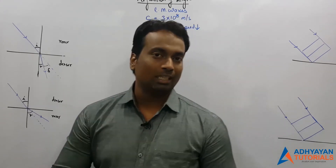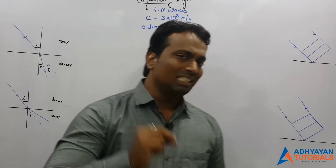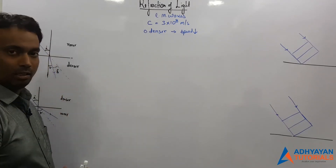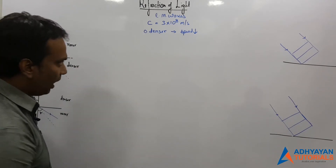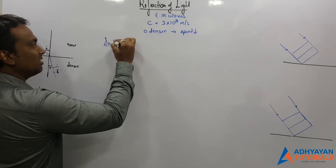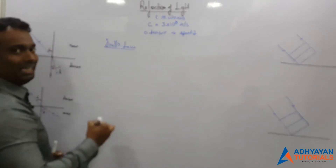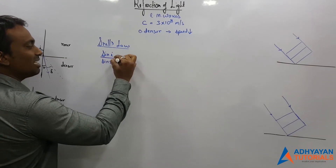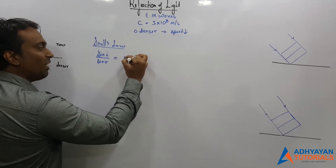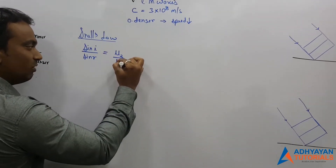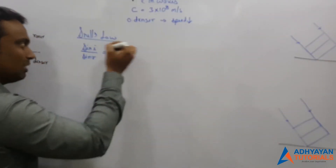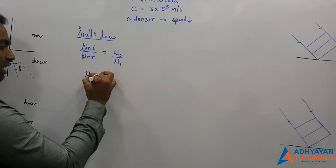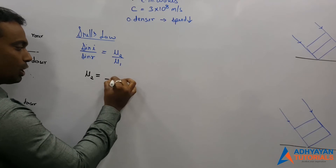We can explain this in two ways. First, using the same formulas from your lower standards — we will explain mathematically why light bends toward the normal from rarer to denser, and away from the normal from denser to rarer. Snell's law states that when light travels from one medium to another, the ratio of sine of the angle of incidence to sine of the angle of refraction is always constant, and that constant is the refractive index of the second medium with respect to the first. By definition, the refractive index of any medium is the ratio of speed of light in vacuum to the speed of light in that medium.